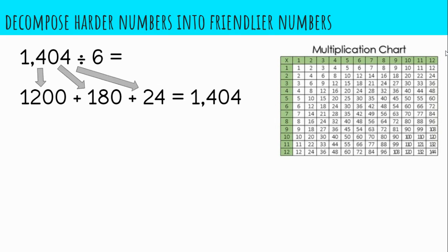So we can see how this number has been decomposed into friendlier chunks. Now use what you already know about arrays. Drop these friendly numbers into your array boxes and divide.